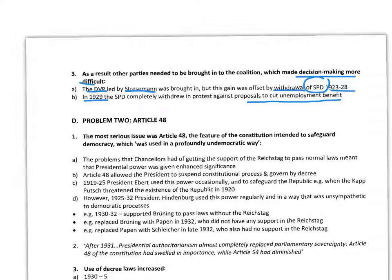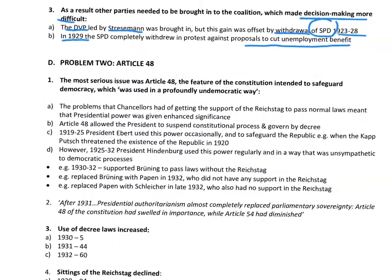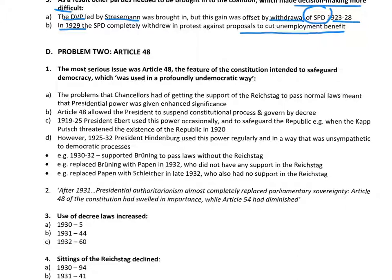The second problem — the one everyone focuses on at GCSE but just one of four — was, according to Lee, the most serious issue: Article 48. As we said, it was intended to safeguard democracy, but it was used in a profoundly undemocratic way. Chancellors found it very difficult to form coalition governments and could not get Reichstag support to pass normal laws, so they increasingly had to revert to Article 48 — the provision to pass laws by presidential decree, allowing the president to suspend constitutional process and govern by decree.